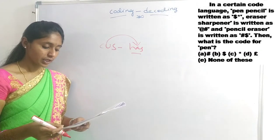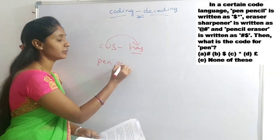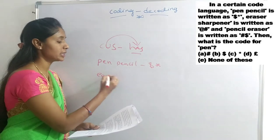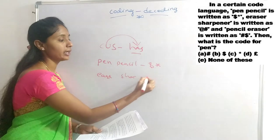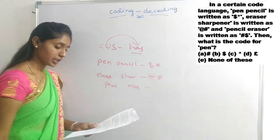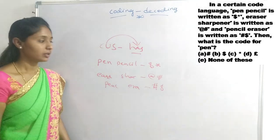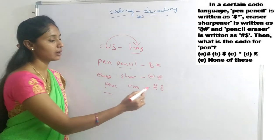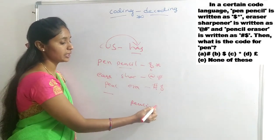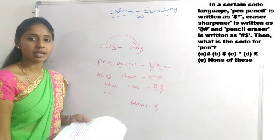Next question: In a certain code language, 'pen pencil' is written as 'dollar star', 'eraser sharpener' is coded as 'eight hash', and 'pencil eraser' is coded as 'hash dollar'. What is the code for 'pen'? Pencil appears in the first and third statements — the common symbol is 'dollar', so pencil is dollar. Therefore the remaining word, pen, is obviously 'star' — option C is the right answer.